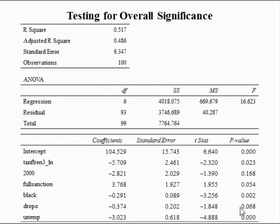Now, remember, this is the Excel output of the multiple regression analysis. The sum of squares due to regression is 4,018. The sum of squares due to error is 3,746.689. The total sum of squares is 7,764.